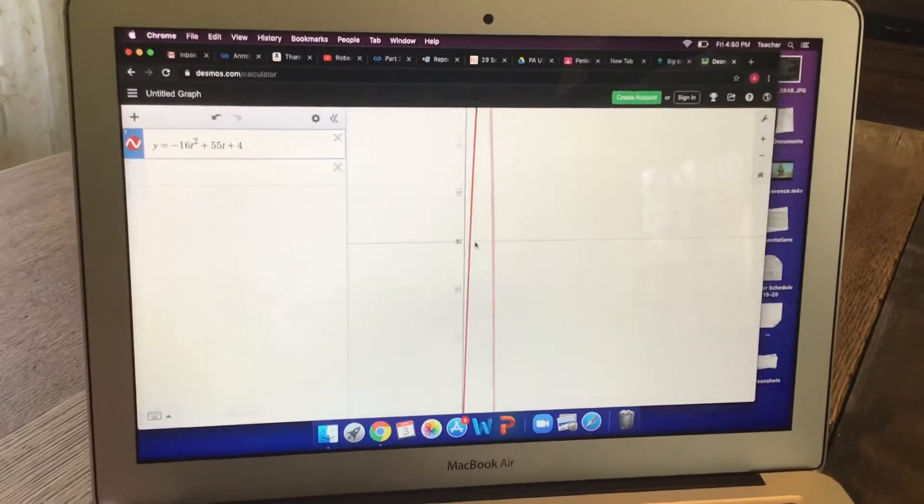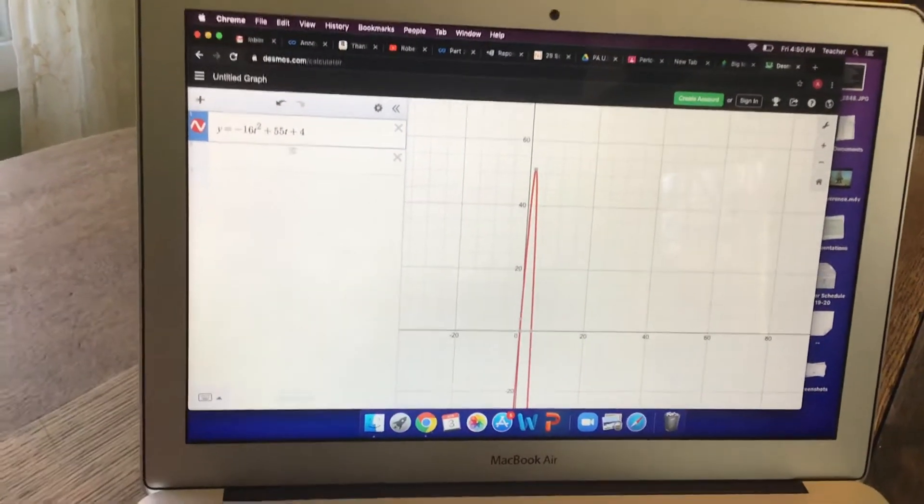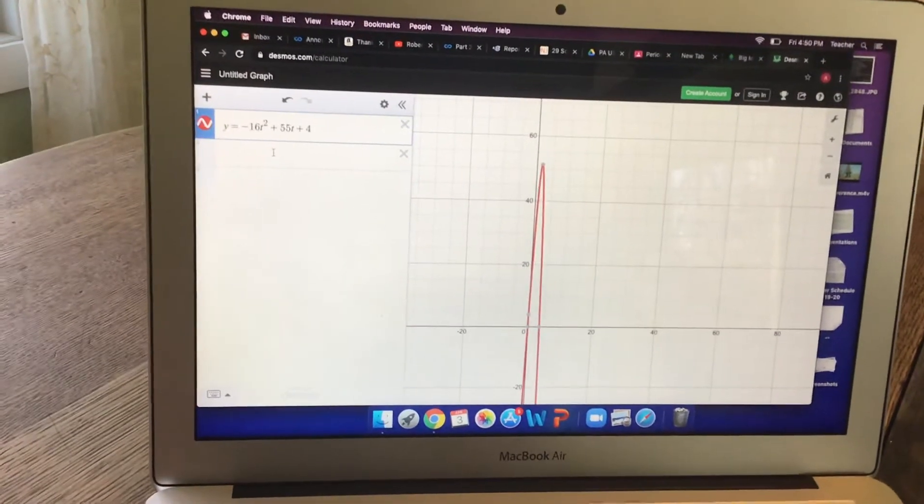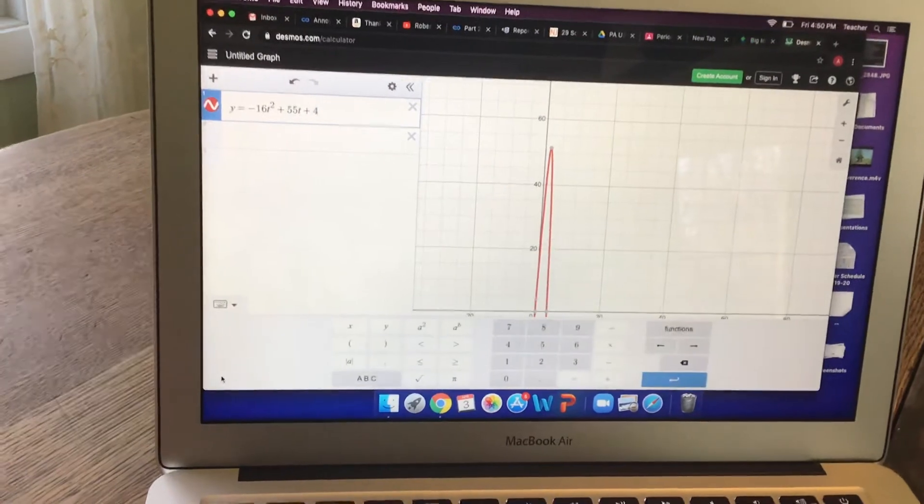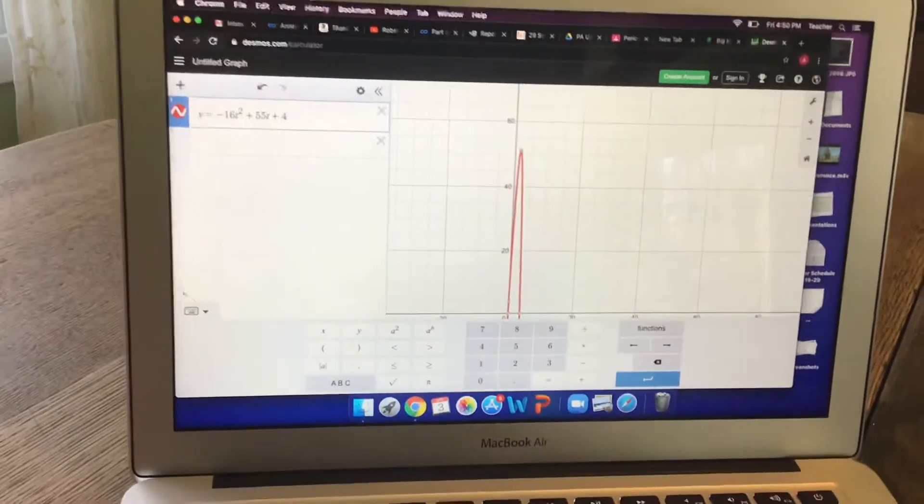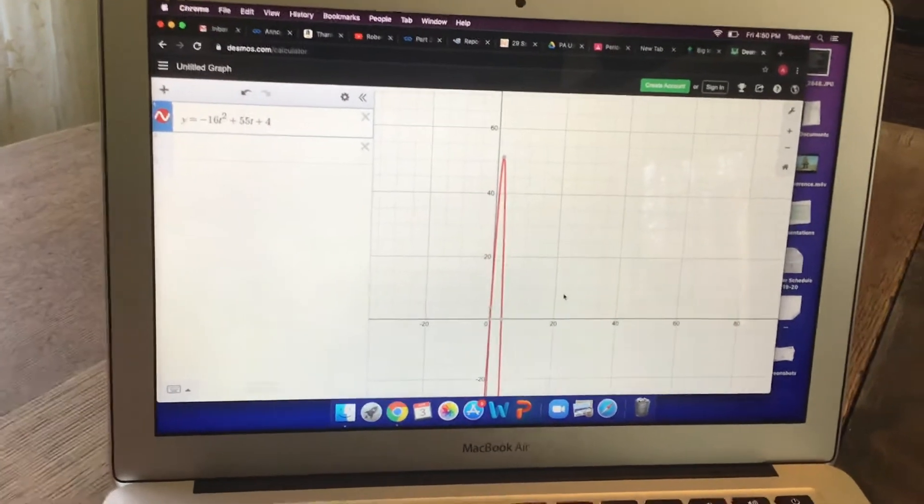I'm going to zoom on out, and you're going to put here the formula. So you put h of t equals, I just put y equals, negative 16t squared plus 55t plus 4, and you can enter it down here. So go ahead and practice doing that. You need to press pause and enter that.